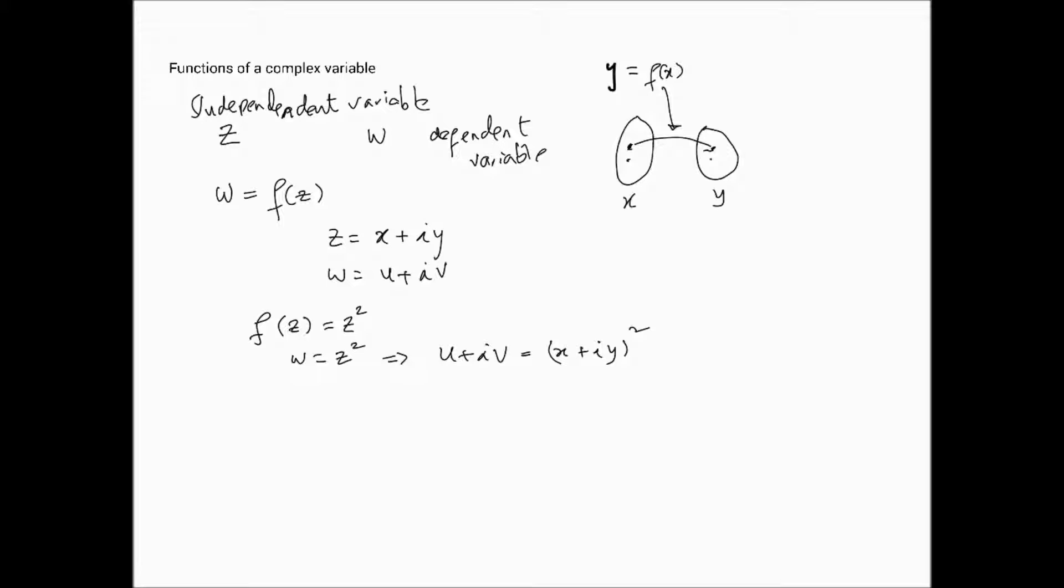So, what happens then? Once we have this, we would like to know the real part and the imaginary part of the function. In order to do that, we would expand. So, u plus iv is going to be equal to x squared minus y squared plus i times 2xy. This would mean that we have the relationship u is equal to x squared minus y squared, and v is equal to 2xy.